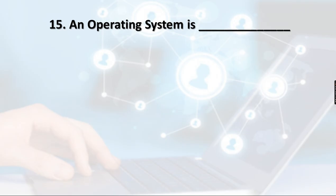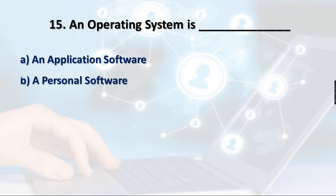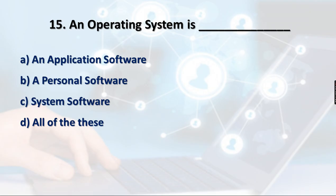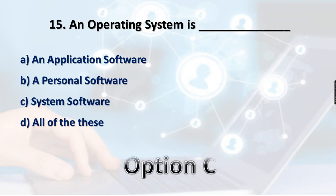Question 15: An operating system is — Option A: Application software, Option B: Personal software, Option C: System software, Option D: All of these. An operating system does not fall under the application category, nor is it personal software. It is used for the system, so it falls under system software. Option C is the right answer.